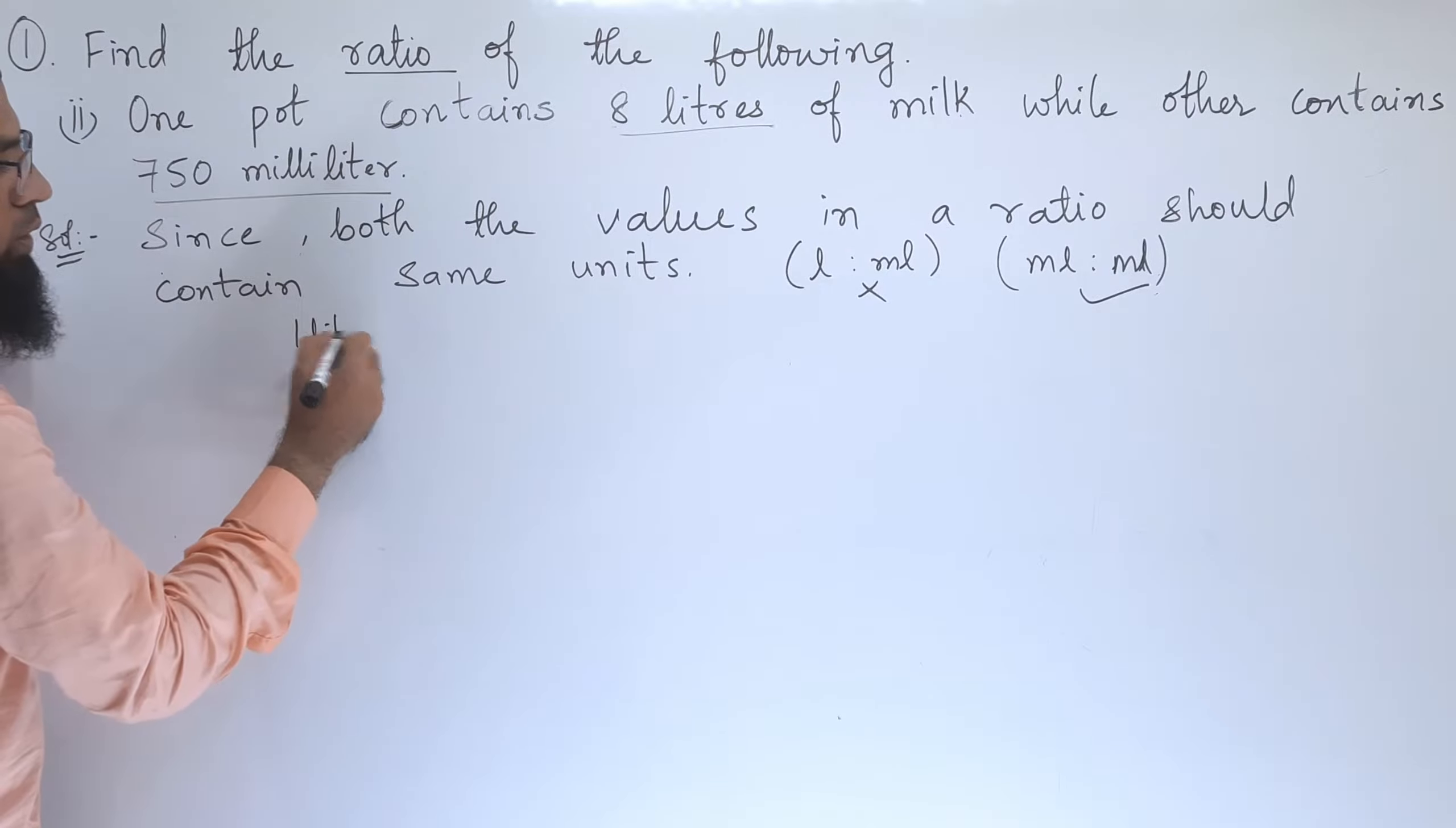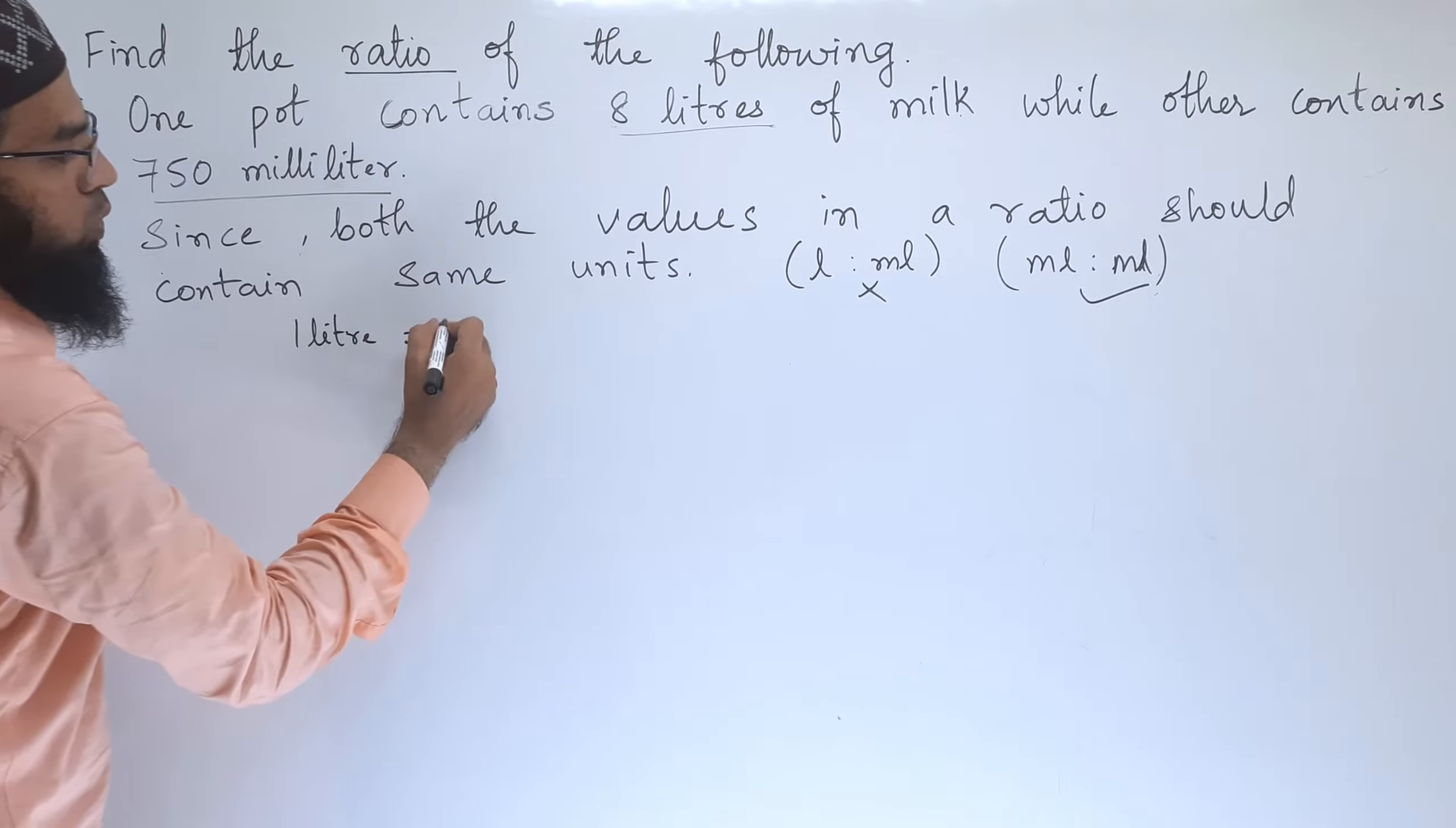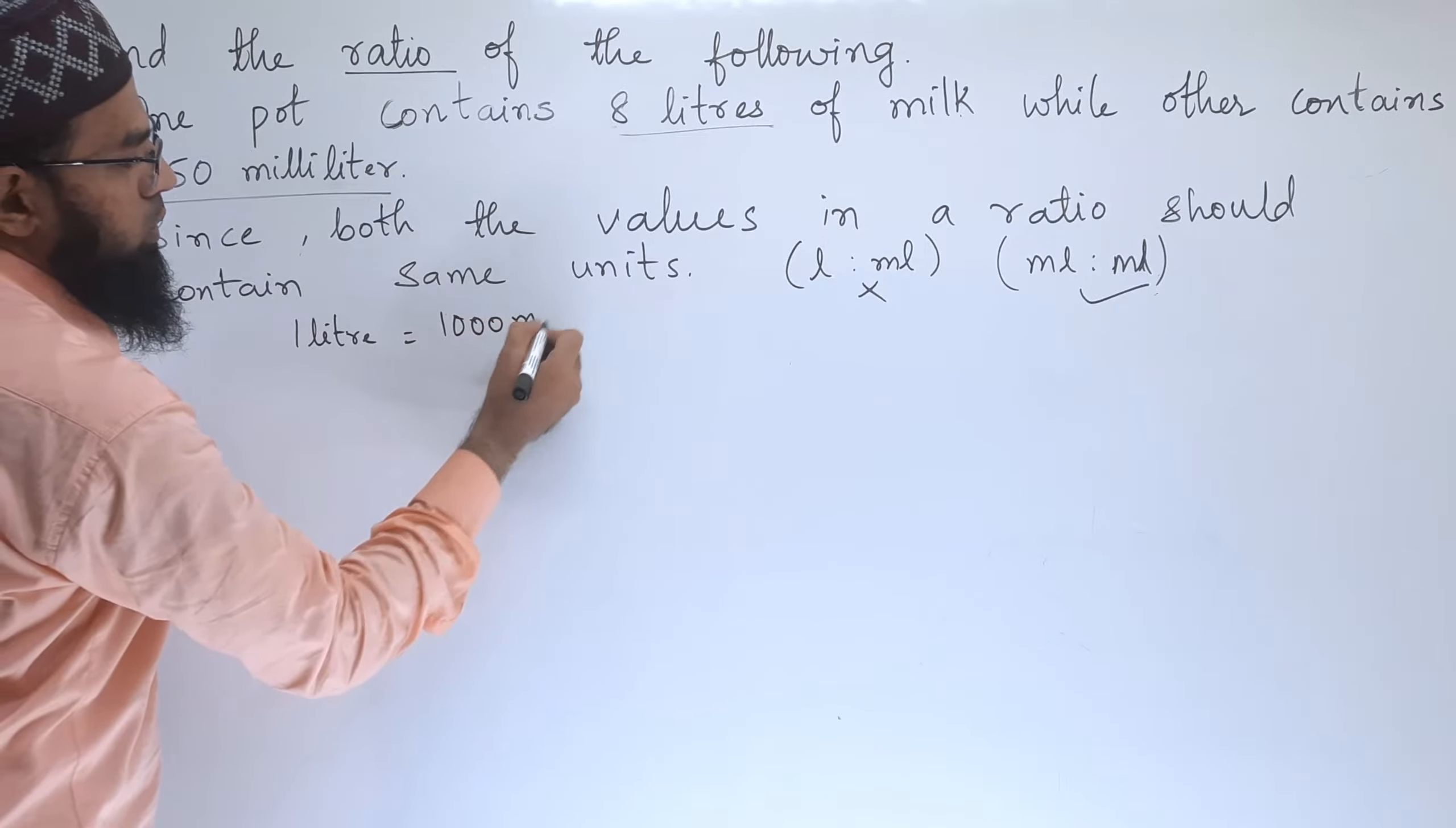So let us write here, we know that 1 liter is equal to 1000 milliliter. For 8 liters, we can write 8000 ml. So the ratio will be, first pot contains 8 liters, that is 8000 is to 750 ml.